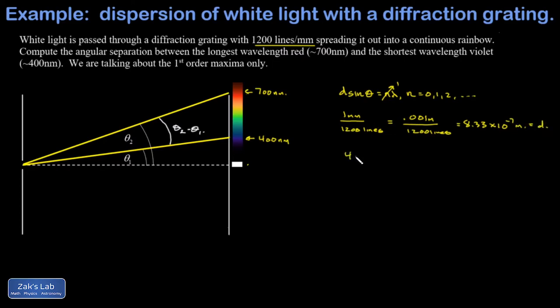So for 400 nanometer light, I'll start by solving for sine theta in this formula, so sine theta is lambda over d. Plug in the wavelength in meters,